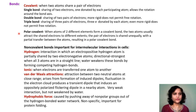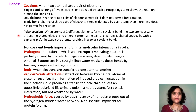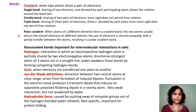An interesting property of covalent bonds is that some are polar. When atoms of two different elements form a covalent bond, these two atoms attract the shared electrons to different extents — the pair of electrons is shared unequally, with a partial transfer between the atoms, resulting in a polar covalent bond.